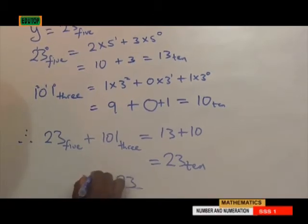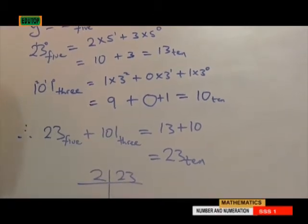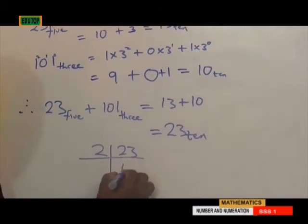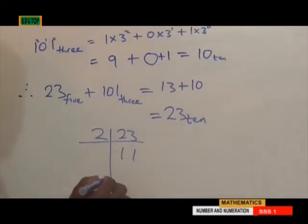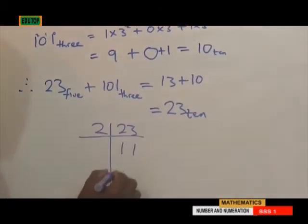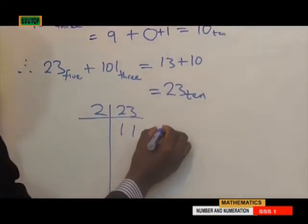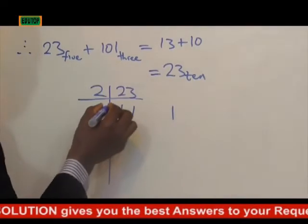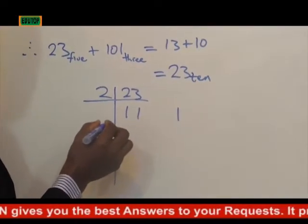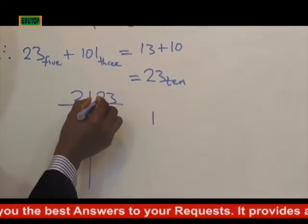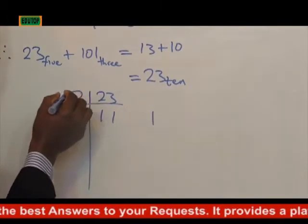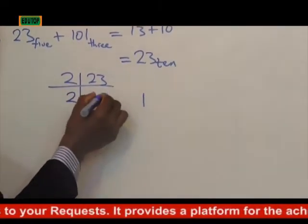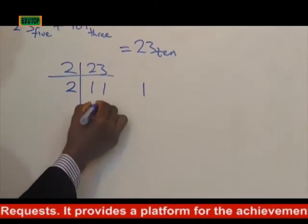23 divided by 2 — we have to leave our answer in base 2. 23 divided by 2 is 11; 2 times 11 is 22, and 23 minus 22 gives us remainder 1. So 23 divided by 2 is 11 remainder 1. Then 11 divided by 2 is 5.